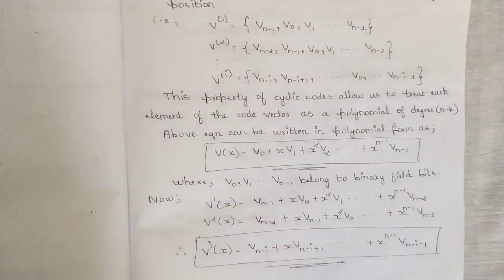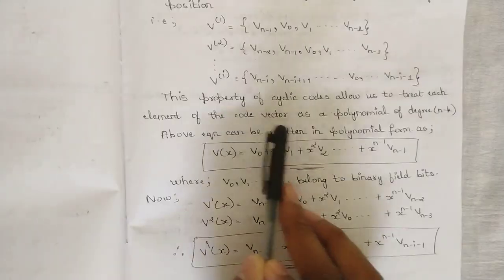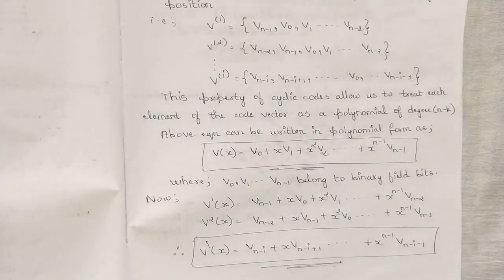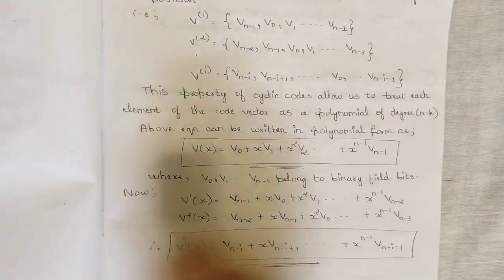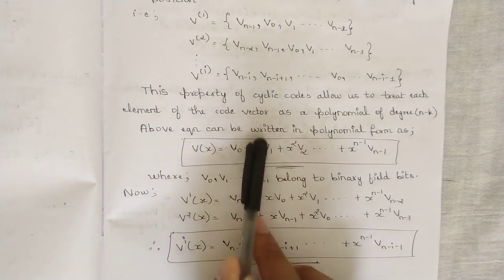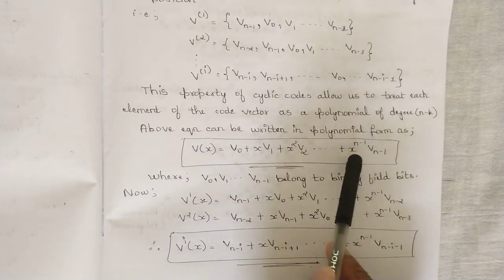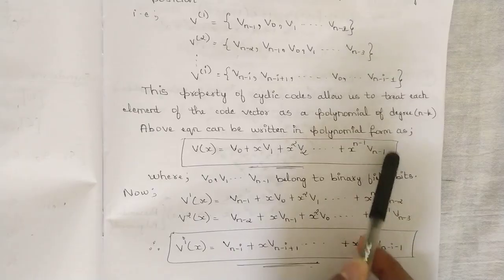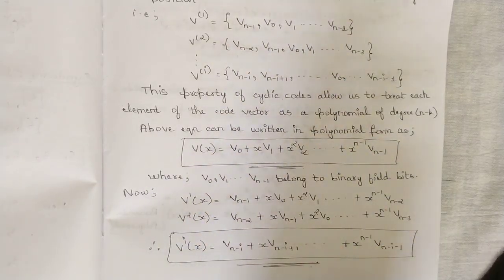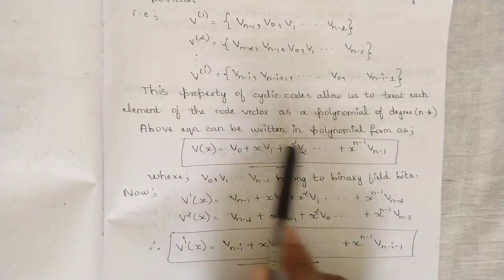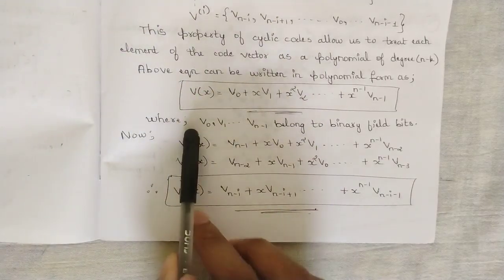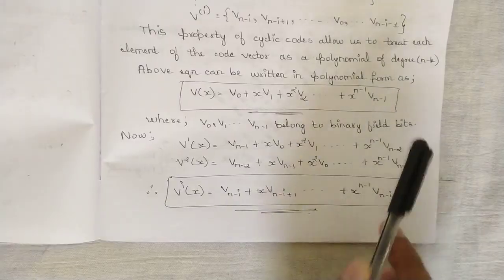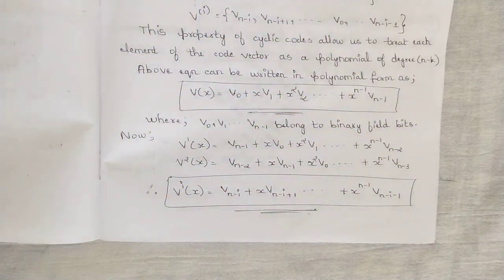This property of cyclic codes allows us to treat each element of the code vector as a polynomial of degree n minus k. The code vector can be written in polynomial form as v(x) = v₀ + x·v₁ + x²·v₂ + ... + x^{n-1}·v_{n-1}, where the coefficient vectors v₀, v₁, v₂ are the cyclic code components belonging to the binary field — either 0 or 1.